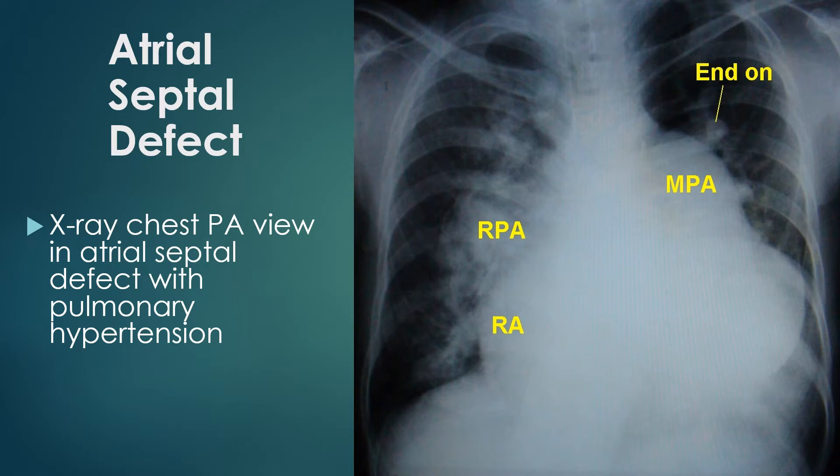Cardiomegaly on chest X-ray is suggestive of atrial septal defect in Eisenmenger syndrome, while it is unlikely in ventricular septal defect and patent ductus arteriosus. Cardiomegaly is mainly due to grossly dilated right atrium in atrial septal defect, as the right atrium is not enlarged in the other two varieties of Eisenmenger syndrome.